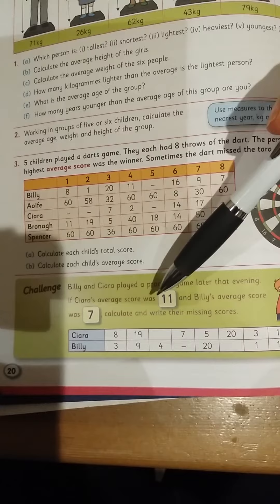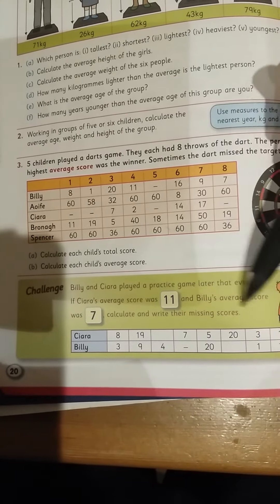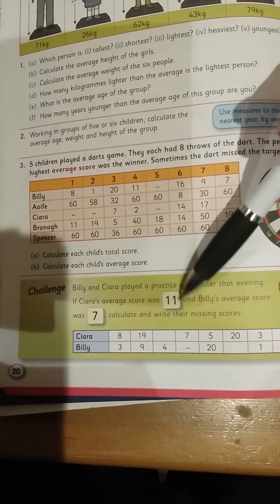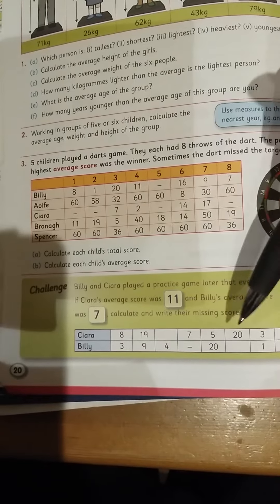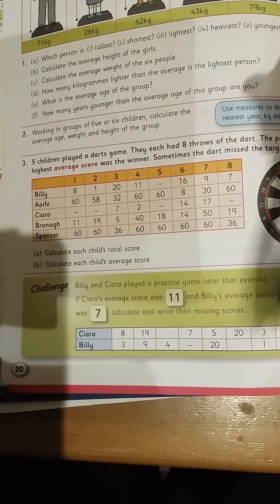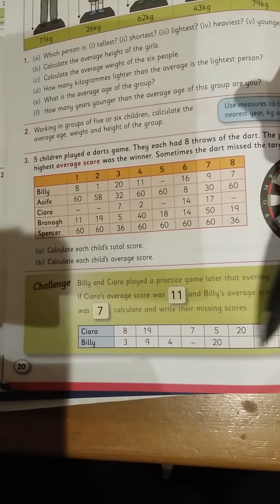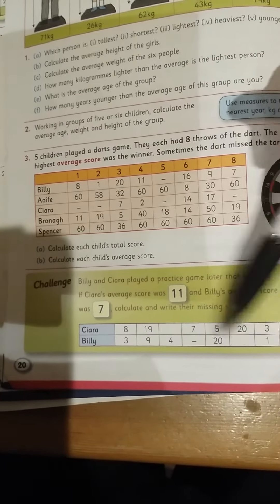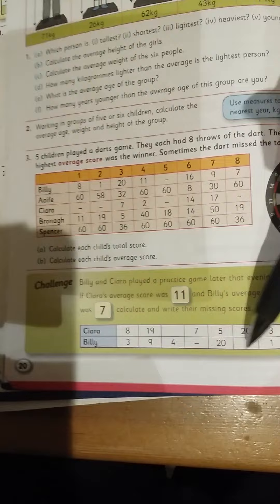Each of the 8 throws. Kira's average was 11, so altogether she would have got 8 multiplied by 11. She would have got 88. Billy would have got 8 multiplied by 7, so he would have got 56 altogether. So you need to try and figure out what's the missing box each time.